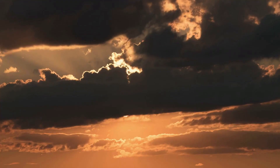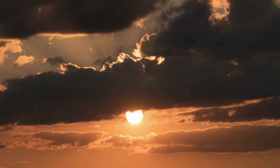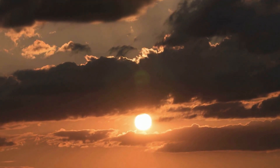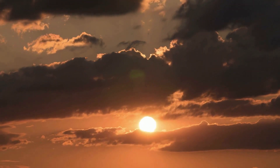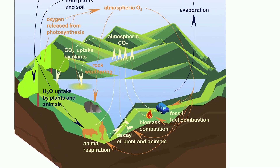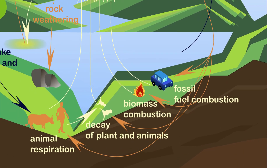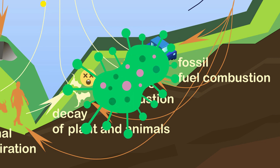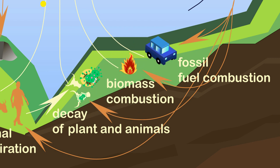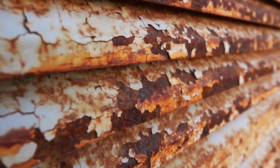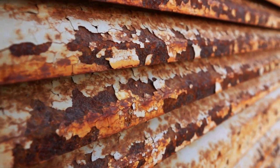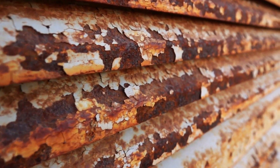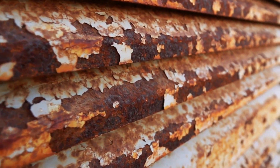Sunlight produces some oxygen when sunlight reacts with water vapor in the atmosphere. Decomposition, which is the breakdown of once-living organisms, uses oxygen and releases carbon dioxide. Microbes use oxygen in order to break down the organisms. Rusting or oxidation involves oxygen in order to create the rust on many metals.